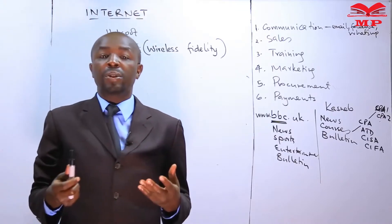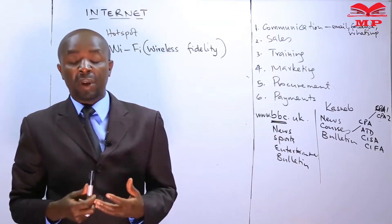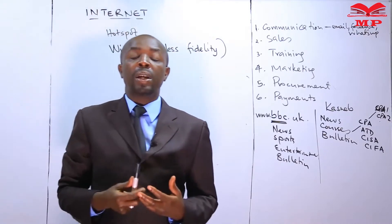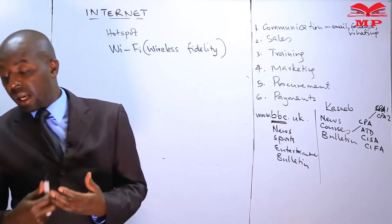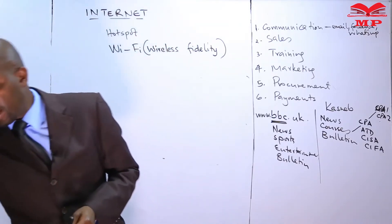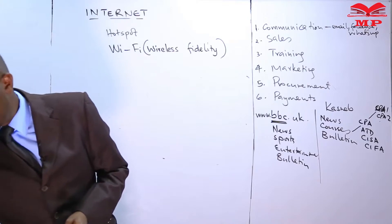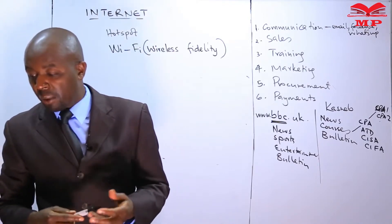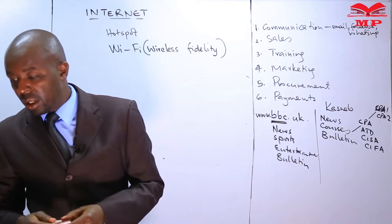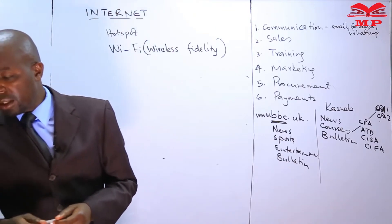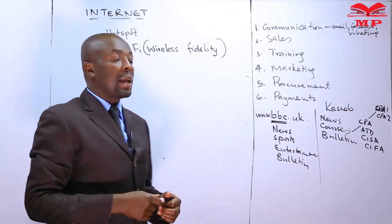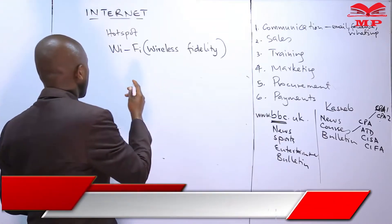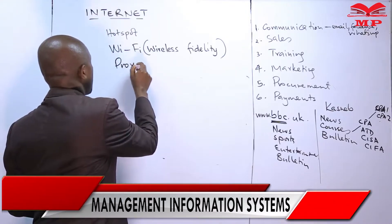For organizations, setting up Wi-Fi allows students and staff to communicate over the wireless signal without paying any individual fee. Wi-Fi is the standard way that computers connect to a wireless signal. There's another term called proxy.